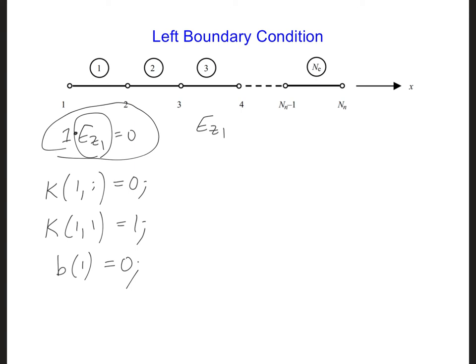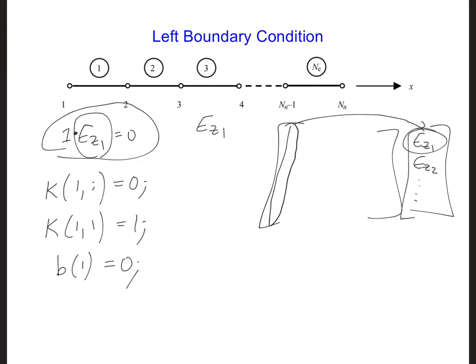All of these coefficients in the first column, so if you know this is our k matrix, here's ez1, ez2, and so forth, all these values in the first column will be multiplied by ez1.